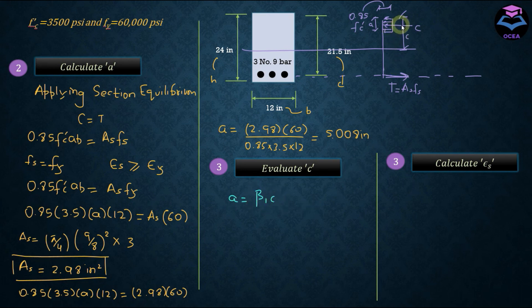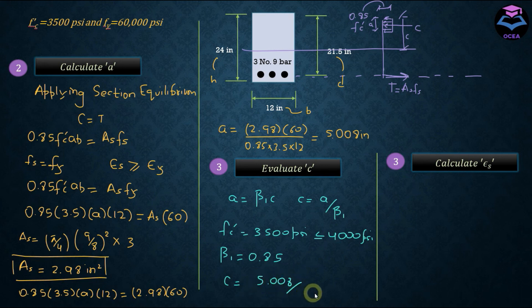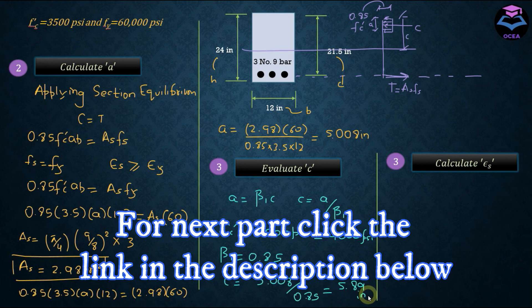Now to evaluate the value of C, we will be using this equation. C is the depth of neutral axis, that is the distance from the top extreme compressive fiber to the line of neutral axis. C from here is equal to A upon beta 1. Since Fc prime is equal to 3500 psi and it's less than 4000 psi, beta 1 is equal to 0.85. C, if we substitute the value of A and beta 1, A upon beta 1 is equal to 5.89 inches.